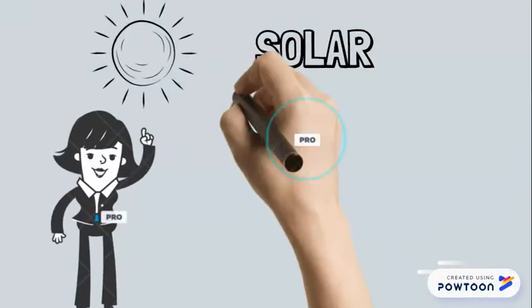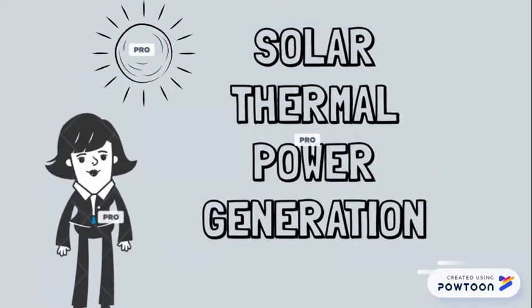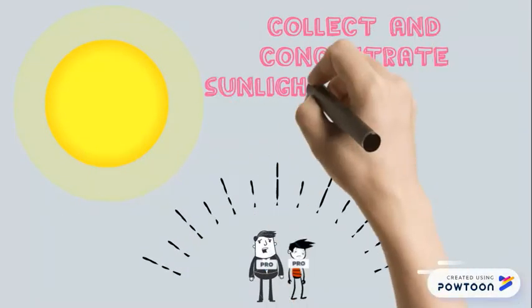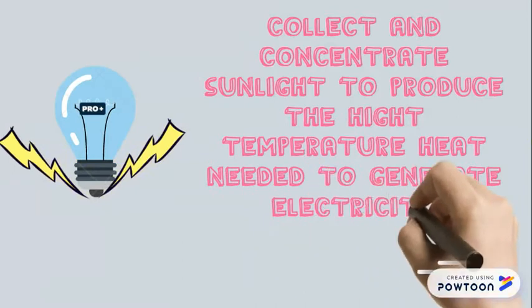Solar thermal power generation systems collect and concentrate sunlight to produce the high-temperature heat needed to generate electricity.